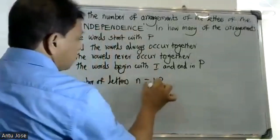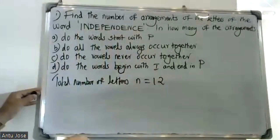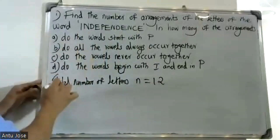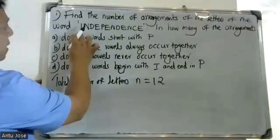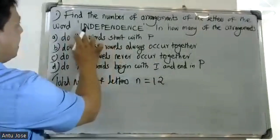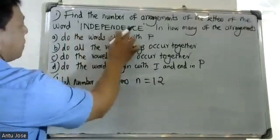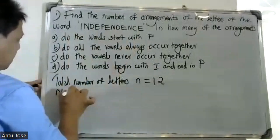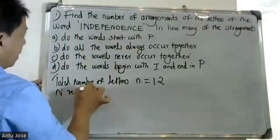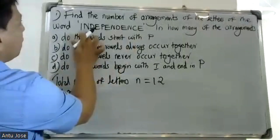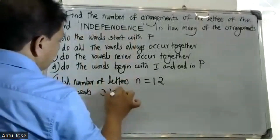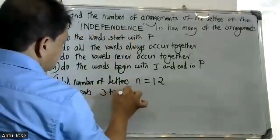In INDEPENDENCE, the number of letters is 12. I repeats — let us check: N repeats. Counting N: 1, 2, 3, 4, 5, 6, 7, 8, 9, 10. N repeats 3 times.